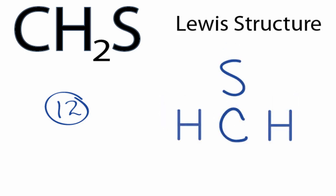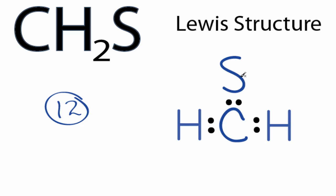We have a total of 12 valence electrons for the CH2S Lewis structure. We'll put two between atoms to form chemical bonds. We've used six. And we'll go around the sulfur — eight, ten, and twelve.